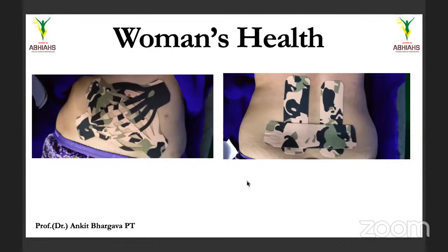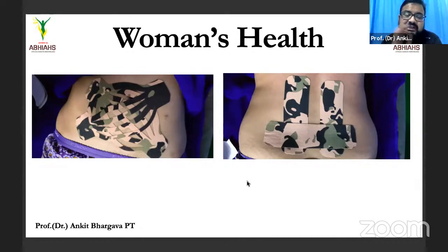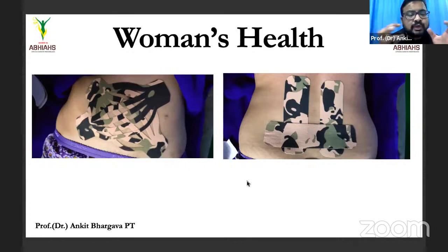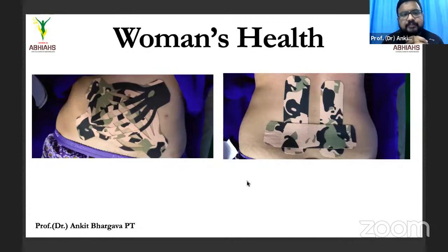Question: How does external taping affect prostaglandins inside? The basics are the same — it increases circulation. This is still the initial stage of research. We need to find out more using ultrasound and other techniques, which we are working on. What we have concluded at the basic level is that the tape gives room for the skin and blood to flow, increasing the gap — that's why females may experience less pain and more flow. We are still not fully clear on the mechanism and will publish a paper on it soon.